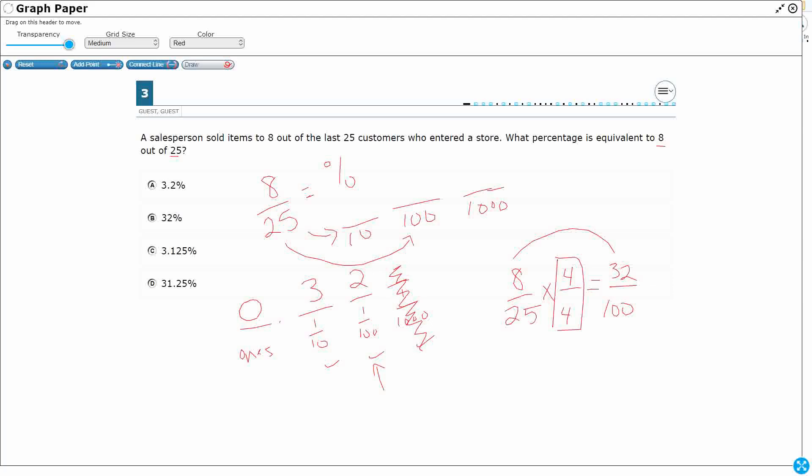Moving it into a percent is going to be pretty easy. You either multiply it by 100, or you just move the decimal over twice. So, it looks like we're going to have that 32%. Now, that's one way to solve this.